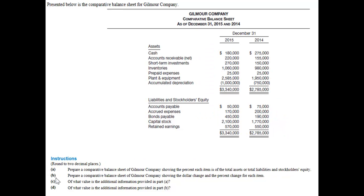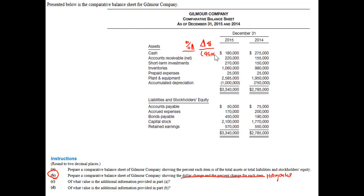In Part B, we're going to do what's called looking at the dollar change and the percentage change for each item. This is known as horizontal analysis, because what we want to look at is between these two years what the change is in dollars and then what the percentage change is. Going from 2014 to 2015, the change in cash was a decrease of $95,000. Expressing that as a percentage, I take $95,000 over the base year, which is the oldest year, of $275,000, and I can see that cash declined 34.55%.